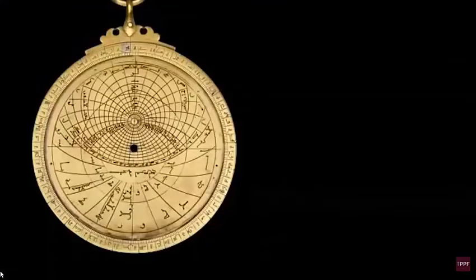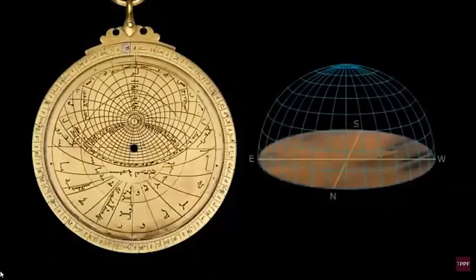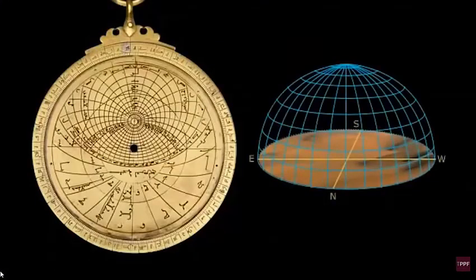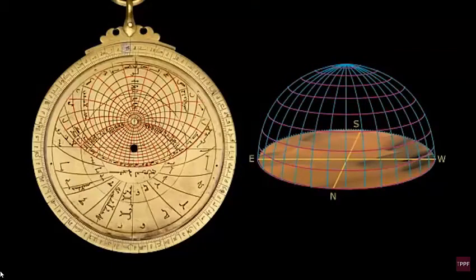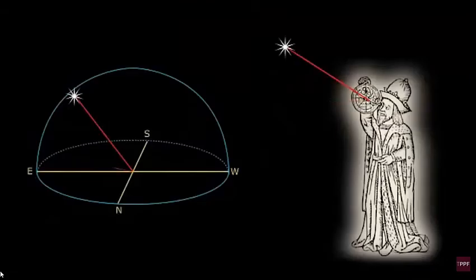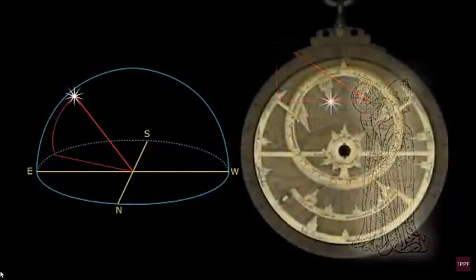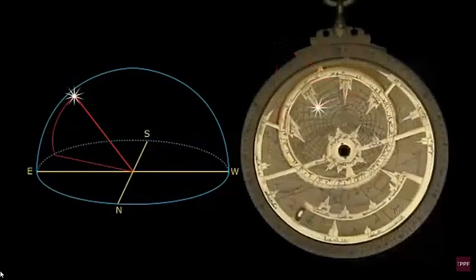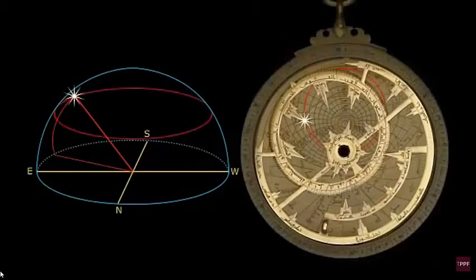Another famous calculator from the past was the astrolabe, which was used to measure the elevation of celestial bodies in the sky. The earliest known reference to one was from around the 2nd century BCE in the Hellenistic civilization. In addition to its value to astronomers, the astrolabe became indispensable for sailors, since it allowed them to determine their local latitude on long voyages.